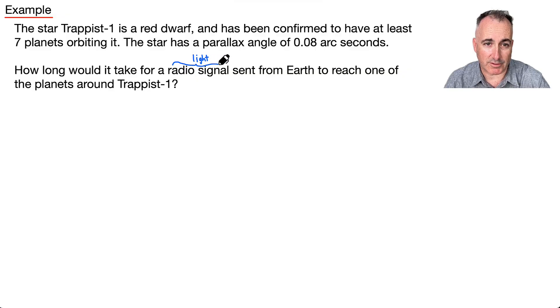Because if we want to send a radio signal, that's light. A radio signal is actually just traveling light. So that means all we have to do is—if we found, for example, that the distance was 20 light years, well that means it would take light 20 years to get there. Boom, we're done.